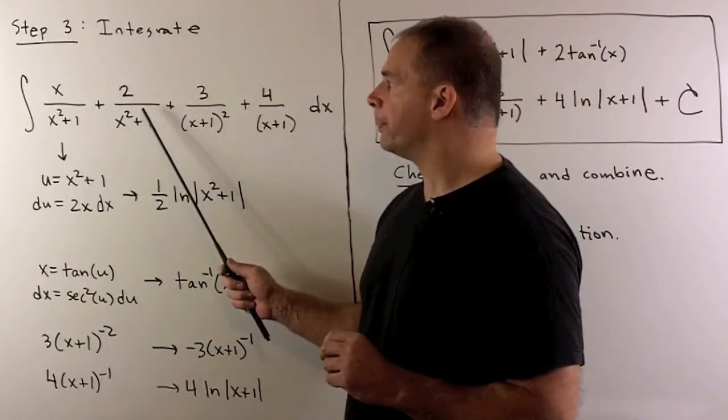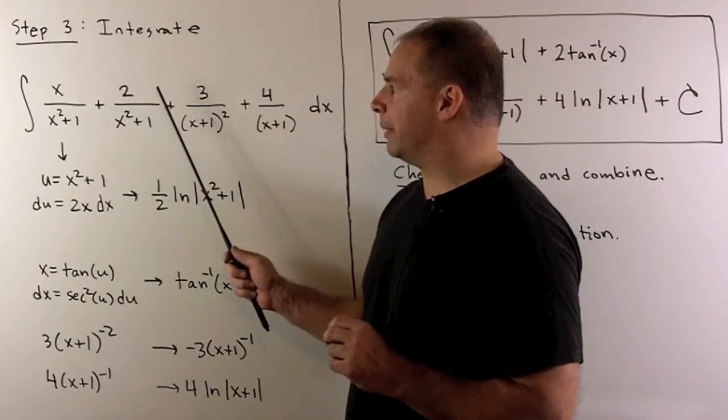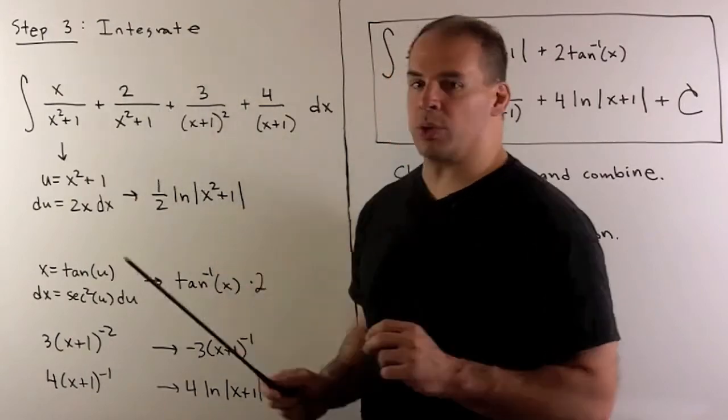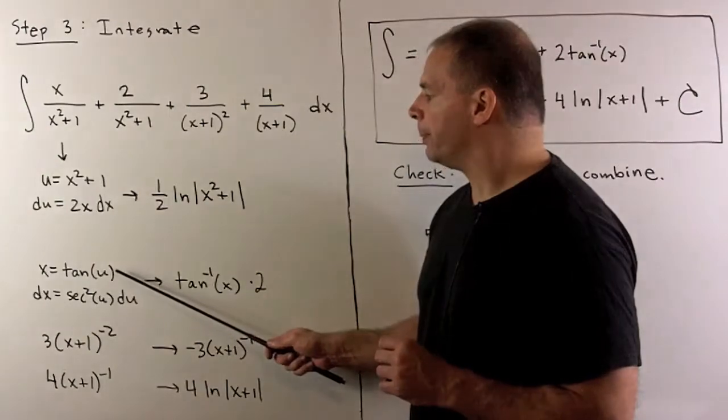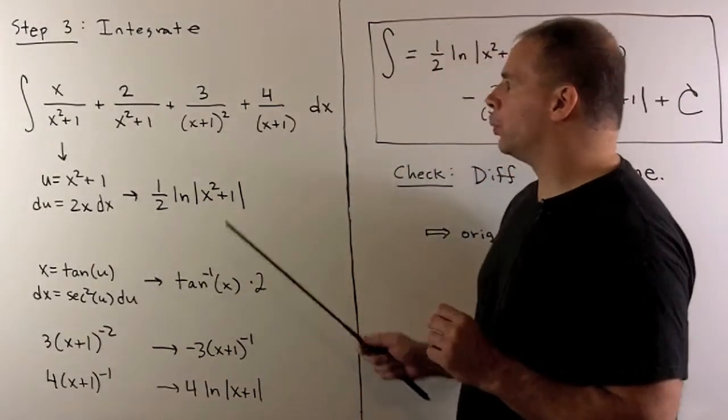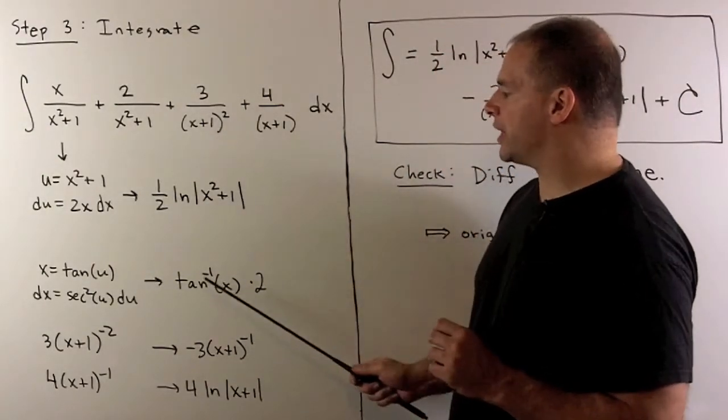For our second term, I note this is going to be the type of function that goes with inverse tangent. So we let x be equal to tangent of u. When you work it out, we get the term 2 inverse tangent of x.